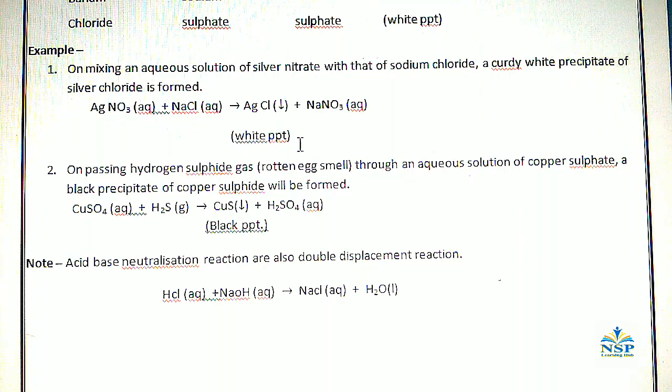Number two. On passing hydrogen sulfide gas, rotten egg smell, through the aqueous solution of copper sulfate, a black precipitate of copper sulfide will be formed. CuSO4 plus H2S gas gives CuS black precipitate plus H2SO4.